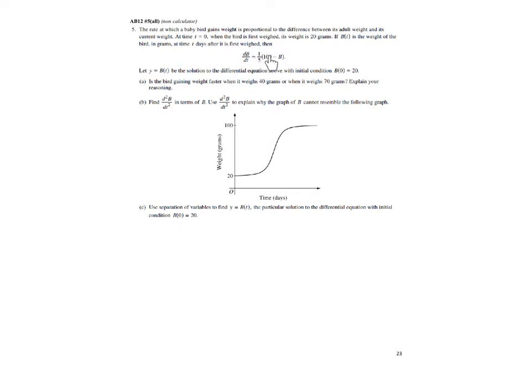Here's its adult weight, here's its current weight. So we can see that clearly the adult weight will be approaching 100 but never reach it. This is called a logistic equation. If you're going on to BC calc, you'll see a lot more of those.